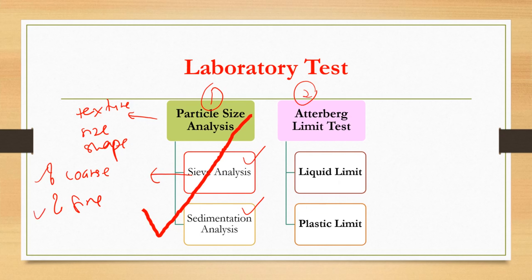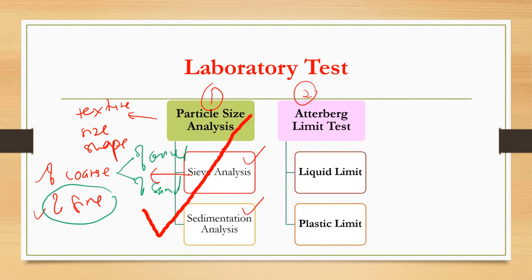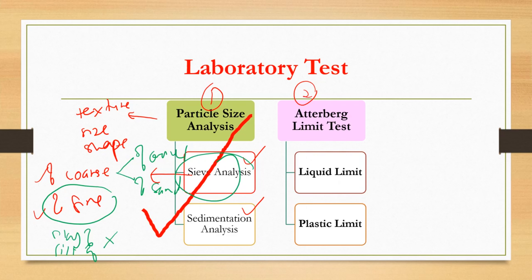In addition to that, you can also identify the percentage of gravel and the percentage of sand, which belong to coarse-grained soil. But you have no idea what the percentage of clay is, and what the percentage of silt is — you cannot get this from sieve analysis, and you cannot further identify the types of fine-grained soil.